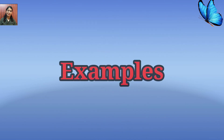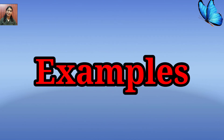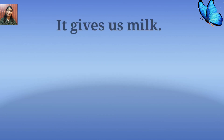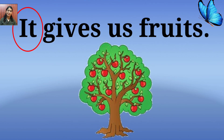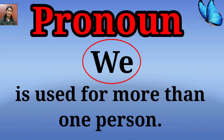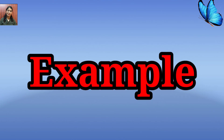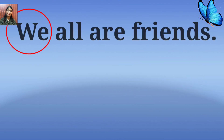The pronoun 'it' is used for one animal or one thing. Examples are: it gives us milk, it gives us fruits.